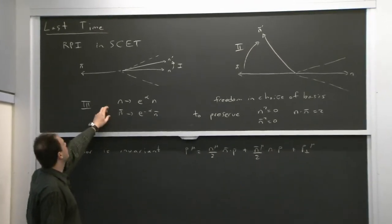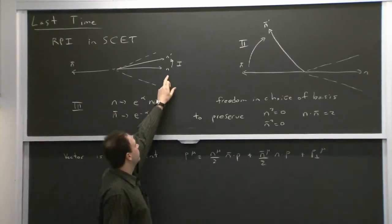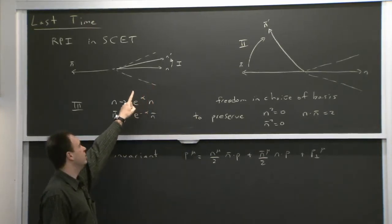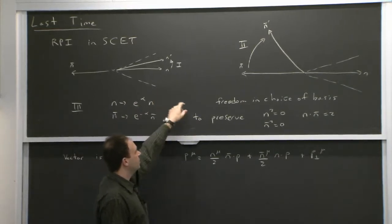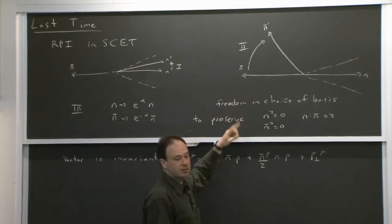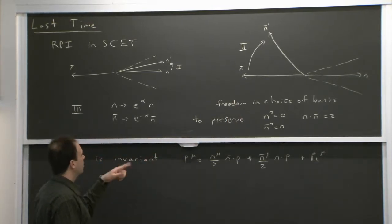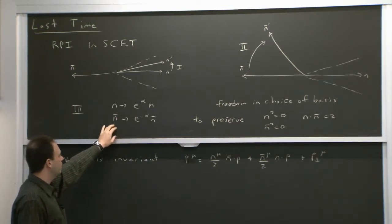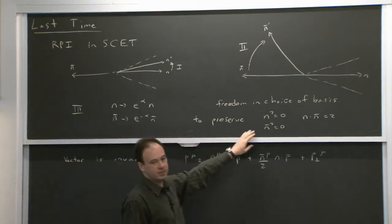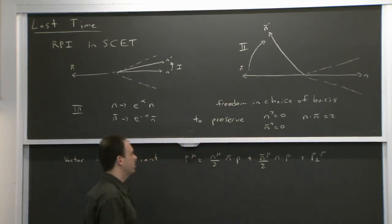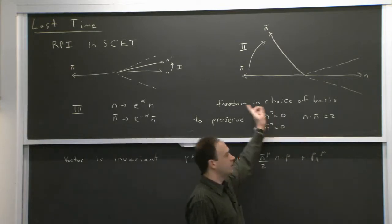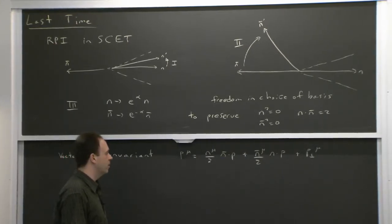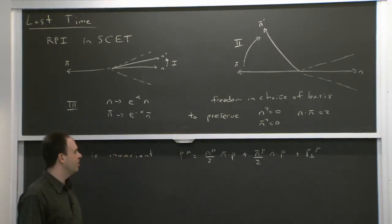We talked about three different types. Type 1: we rotate the physical n vector — the direction of our collinear particles — to some other equally good vector n prime. Type 2: we change the auxiliary vector n bar by a large amount. Type 3: we change both n and n bar in a way that dot products remain invariant. All three preserve n squared equals 0, n bar squared equals 0, and n dot n bar equals 2.